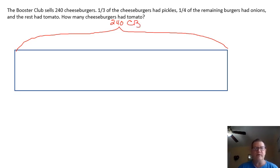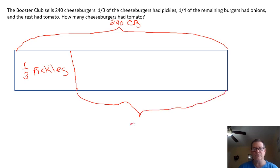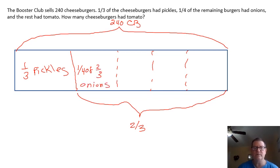It says one-third had pickles, so let's make our one-third and write pickles. Now it says one-third of the remaining — the remaining here is two-thirds. So if I split these up into thirds, one-third of two-thirds had onions. It says the rest had tomato — and the rest happens to be three-fourths of two-thirds.